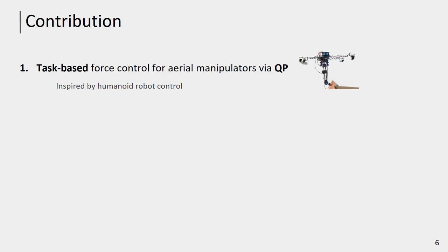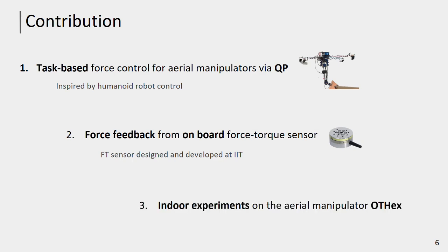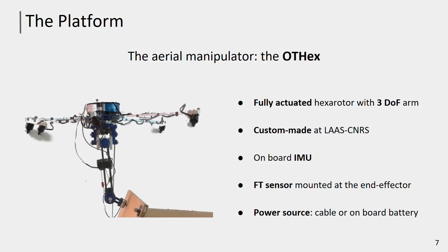Inspired by humanoid robot control, in this paper we designed a task-based control strategy for aerial manipulators via quadratic programming optimization. To include direct force feedback in the control design, we mounted a force-torque sensor on the robot end-effector. Indoor experiments are performed with the aerial manipulator OTEX, a custom-made aerial manipulator entirely developed at our lab. It is composed of a fully actuated hexarotor coupled with a three degrees of freedom arm, endowed with an onboard IMU and force sensor, with power source that can be either external or an onboard battery.